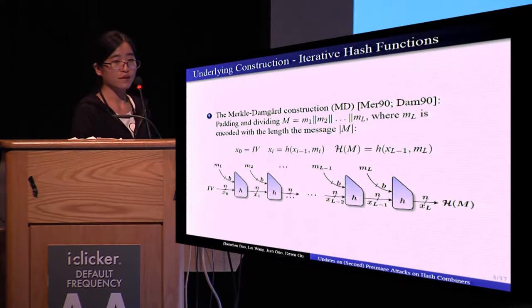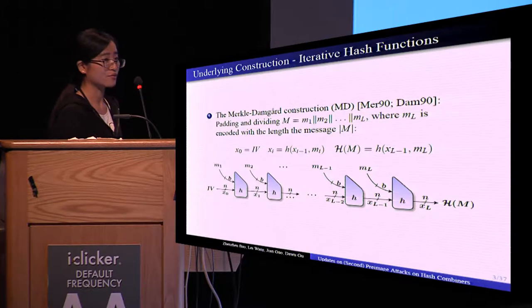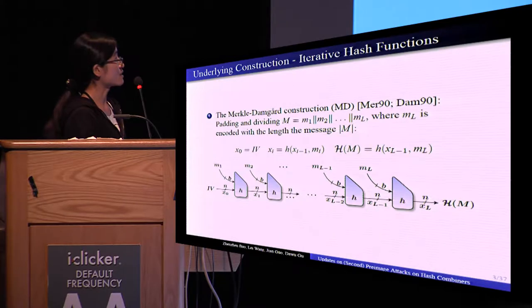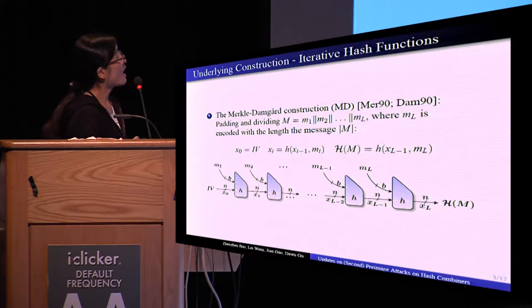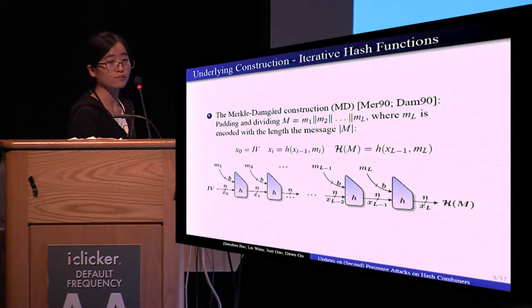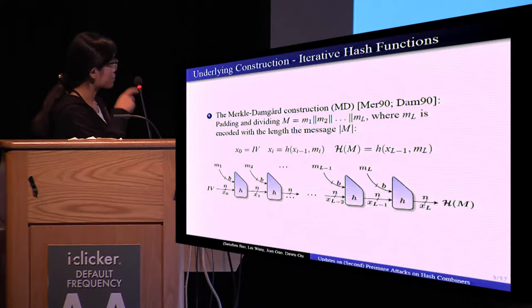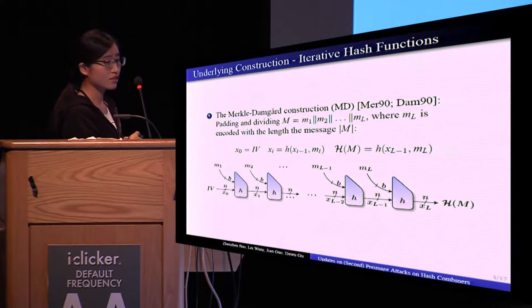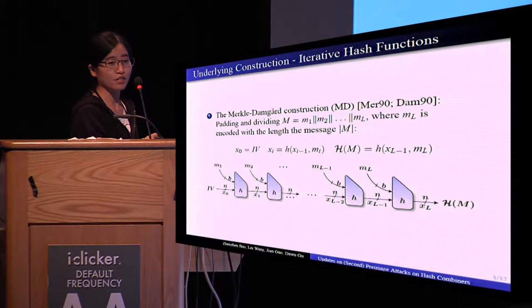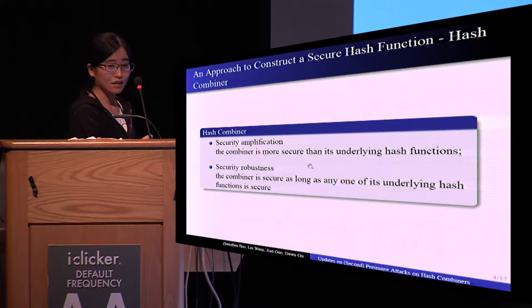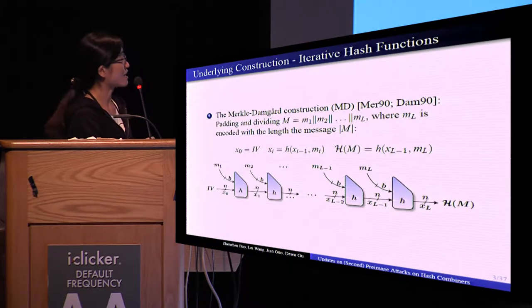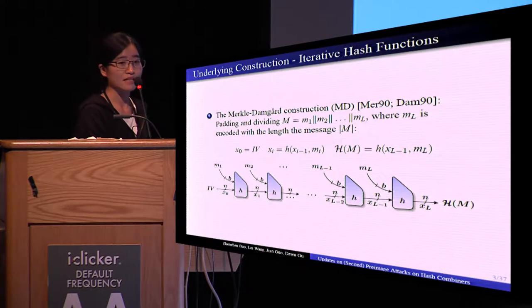We usually build hash functions using iterative construction. A classical one is the Merkle-Damgård construction. For a given message, it first appends some padding bits and the message length so that the length is divisible by b, and splits the message into blocks of b bits. Then it uses those message blocks to update an internal state with an identical compression function. The last message block is encoded with the message length — this is the so-called length strengthening.